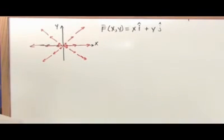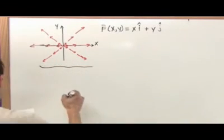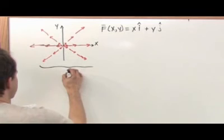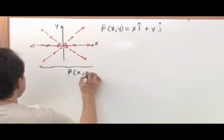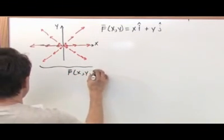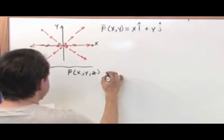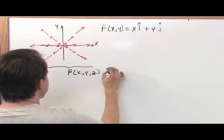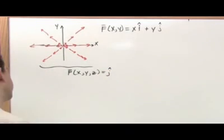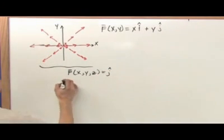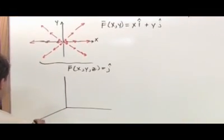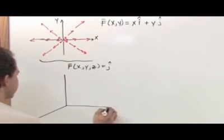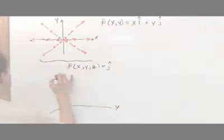So what would a vector field look like in three dimensions — F(x, y, z)? Let's say it was a very simple-looking vector field with just a J component. If you're trying to draw a three-dimensional thing, go ahead and draw your three-dimensional vector.